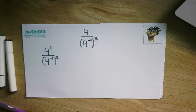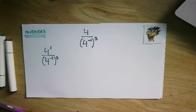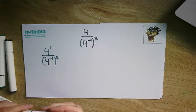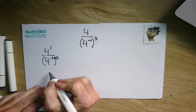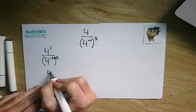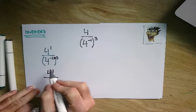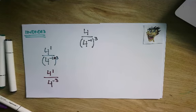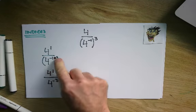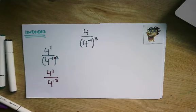Now remember, when we have these brackets, we multiply these two numbers together. So that becomes 4 to the 1 all over 4 to the minus 3. So we multiply those out and you've got to get your negative numbers sorted out.